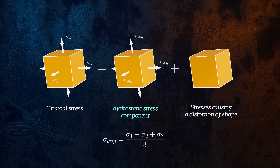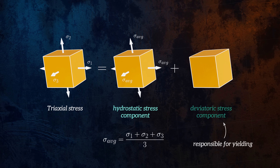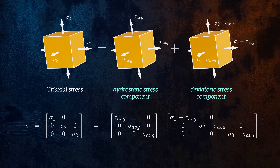The mechanism that causes yielding of ductile materials is shear deformation. Since there are no shear stresses for a state of hydrostatic stress, this component can be very large and still not contribute to yielding. Yielding is only caused by the stresses which cause shape distortion. These are called deviatoric stresses. The deviatoric component is calculated by subtracting the hydrostatic component from each of the principal stresses. The hydrostatic and deviatoric components can be expressed in matrix form. Here we have described the stress state using the principal stresses, but we could also describe it for an arbitrary orientation of the stress element.